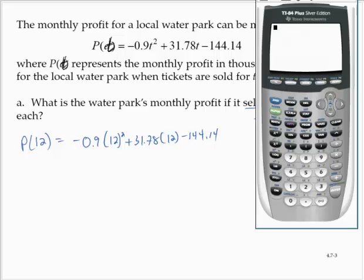Let's calculate that. Alright, -0.9(12)² + 31.78(12) - 144.14 is 107.62.